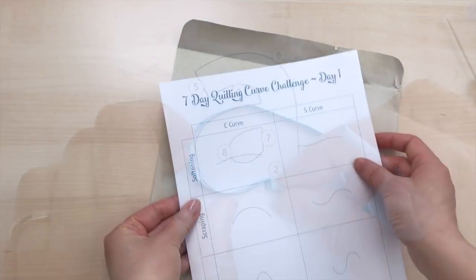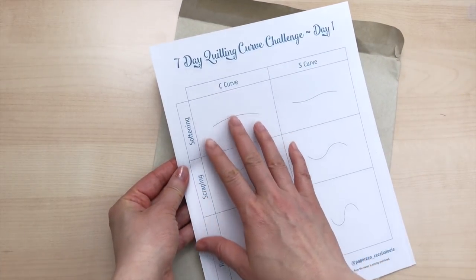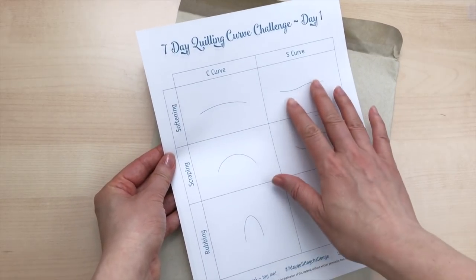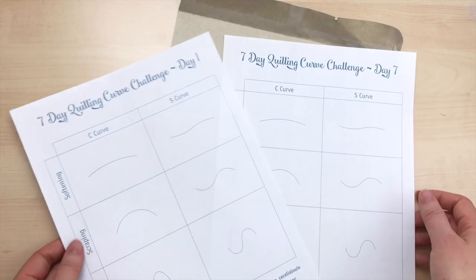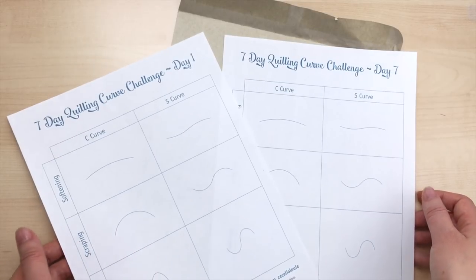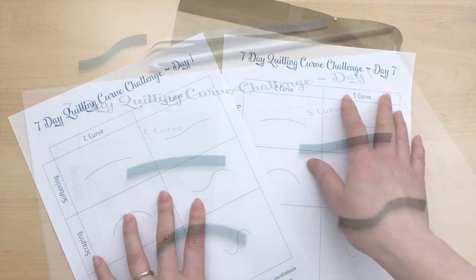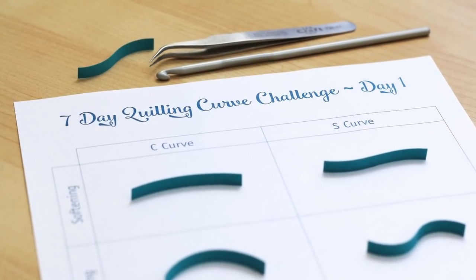After making these curves, your fingers are going to learn the correct tension needed for all these arcs. At the end of the seven days, you'll be able to compare how you did on day one to day seven and see how you've improved. You can even challenge other quillers and try practicing them together.